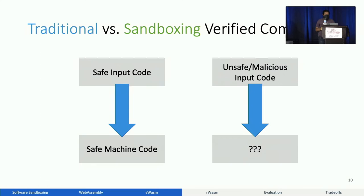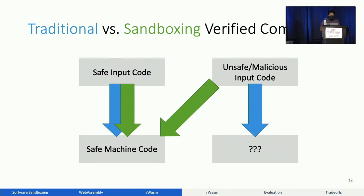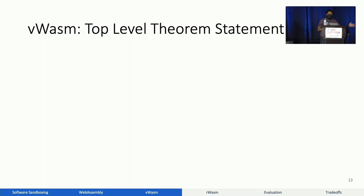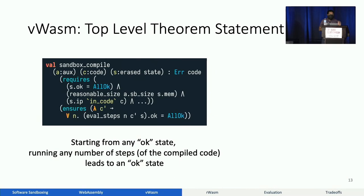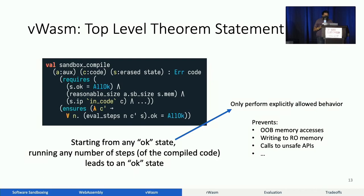With a sandboxing compiler, what we would like to do is have safe code stay safe, and unsafe or malicious code become safe somehow. And this is where we WASM comes in. Our top-level theorem statement, written in simplified form here, states in simpler English: if we start the compiled program at any okay state and run it for any number of steps, we should still remain in an okay state. Okay means that we only perform explicitly allowed behavior, which completely prevents things like out-of-bound memory accesses, writing to read-only memory, or making calls to unsafe APIs or arbitrary system calls. Thus, sandboxing is guaranteed.